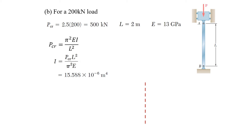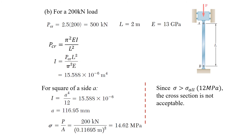For the 200 kN load, using the same approach, PCR equals 500 kN. Applying Euler's formula gives I equals 15.5 × 10⁻⁶ m⁴. For a square cross-section, I equals a⁴/12, giving a equals 116.95 mm, rounded to 117 mm. Substituting into the stress equation gives a stress of approximately 14.62 MPa. Since the applied stress is greater than the allowable stress of 12 MPa, this cross-section is not acceptable.